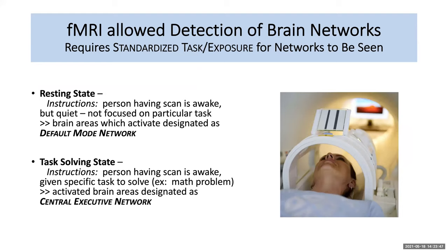The fMRI allows detection of brain networks, but requires that the person being scanned follows standardized tasks or exposures, so that the same network will always light up. In the image on the right, we see a woman with her head inside a tube going into the fMRI machine. Above her head is a card where the scientist can project a particular image or task. The first task is always to evaluate the patient in the resting state — the instructions are to stay awake but quiet, not focused on a particular task. Scientists have determined that consistent areas which activate have been designated the default mode network.